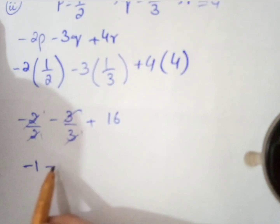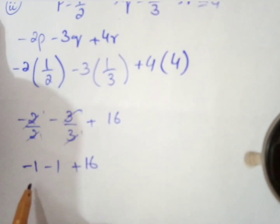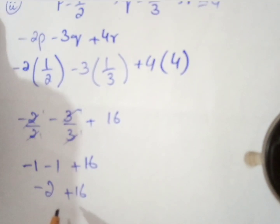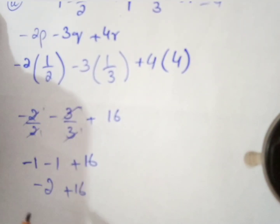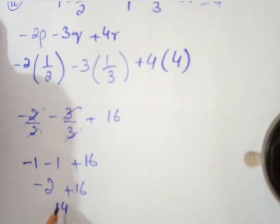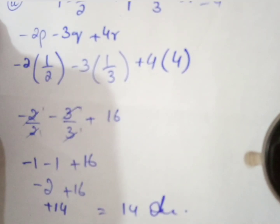We get minus 1 from the first term, minus 1 from the second term, and 16 from the third term. Now: minus 1 minus 1 equals minus 2, and minus 2 plus 16 equals 14. The greater term has the positive sign, so the answer is 14 for Question 2 Part 2.